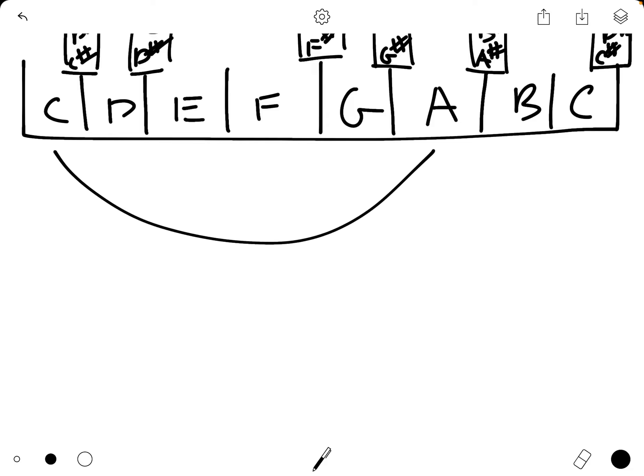So if these are seconds from C to D from C to G, we are going to call a fifth. From C to A, sixth. From C to B, seventh. And from C to C, we won't call it an eighth because we have a special name for it. That is called an octave.